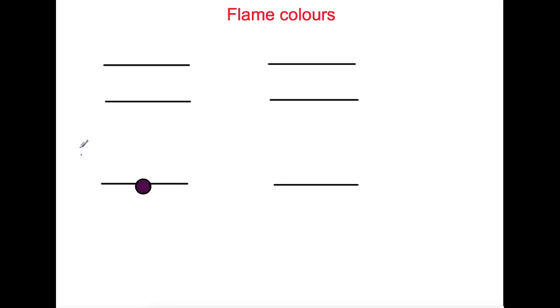Let's have a look at flame colors. To produce a flame color, first a metal solution is vaporized in a flame. This uses heat to excite an electron from the ground state to a higher energy state.